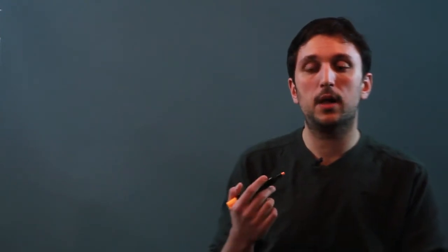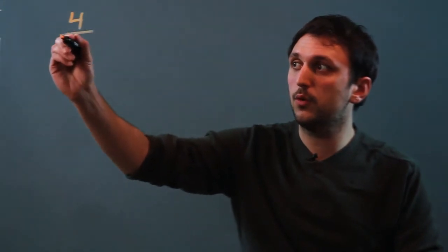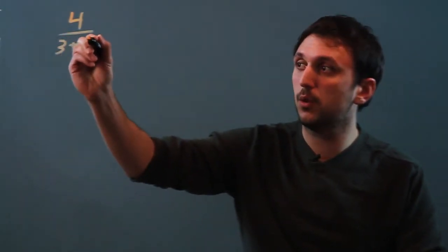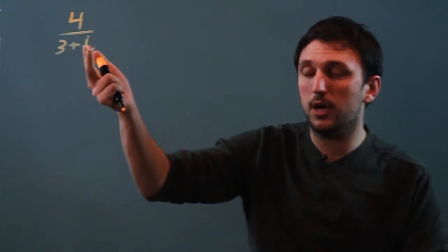So first, let's pick a polynomial and a complex number. Let's say we have 4 over 3 plus i. Now i is an imaginary number, also called a complex number.